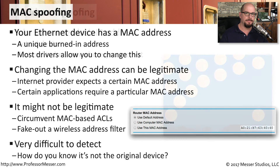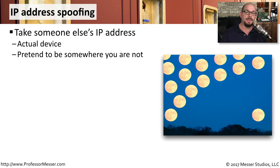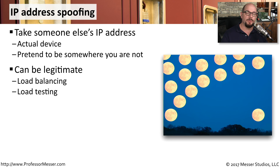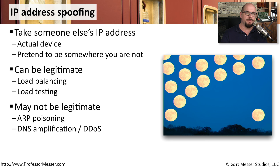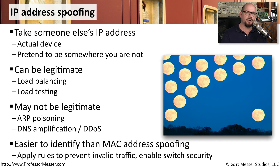IP address spoofing is very similar to MAC address spoofing, except with IP address spoofing you're taking the IP address of another device, or pretending to be a device that isn't even on your network. This may be completely legitimate — maybe you're using multiple spoofed IP addresses to perform load balancing or to test that load. But sometimes a spoofed IP address is done for malicious reasons, such as during ARP poisoning, or spoofed IP addresses used for DNS amplification in distributed denial of service attacks. Since only a certain range of IP addresses should be associated with a particular subnet, it's a lot easier to detect a spoofed IP address than a spoofed MAC address. It can be very easy to configure firewall rules to help prevent unwanted traffic or traffic spoofed with a fake IP address.